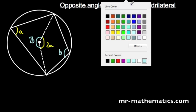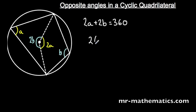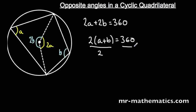Now we have angles about a point which are 2A and 2B, so 2A and 2B would equal 360 degrees. We can factorise this and take out the 2, so 2 lots of A add B equals 360, and we can divide both sides by 2 because they cancel.